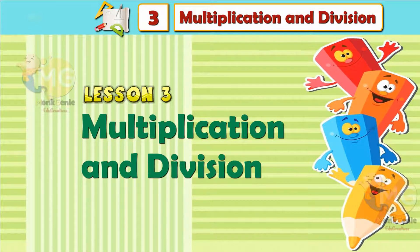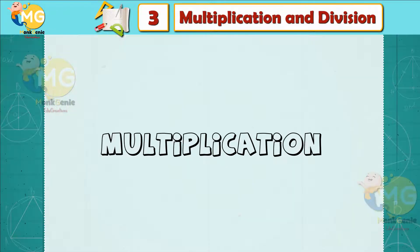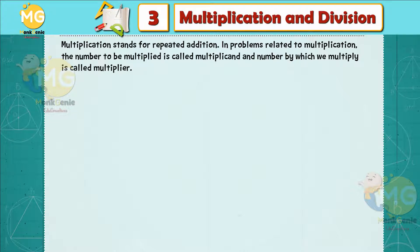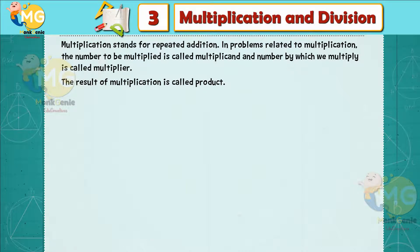Chapter 3: Multiplication and Division. Multiplication stands for repeated addition. In problems related to multiplication, the number to be multiplied is called the multiplicand, the number by which we multiply is called the multiplier, and the result of multiplication is called the product.